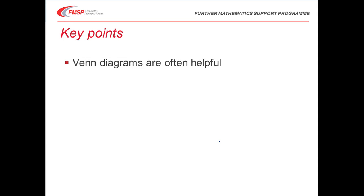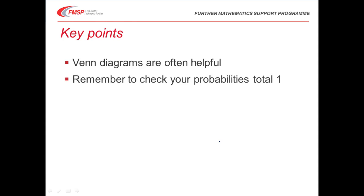Key points: Venn diagrams are often very helpful. Quite often you can draw the diagram, fill in the numbers, and then just read off the answers to several questions. Do remember to check that your probabilities total 1 when drawing a Venn diagram. And remember this key point: the probability of at least one happening is the same as the probability of none happening subtracted from 1. This is a really useful trick.